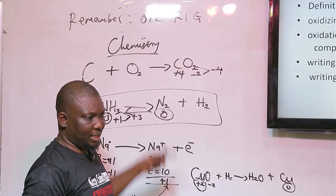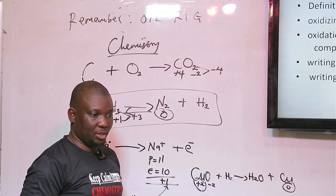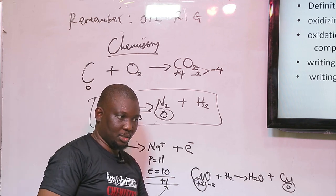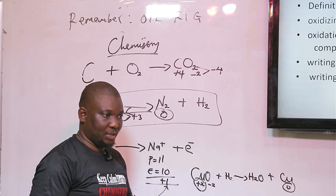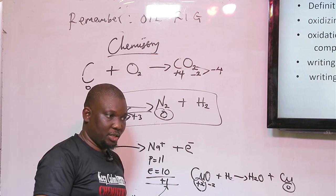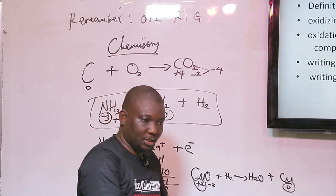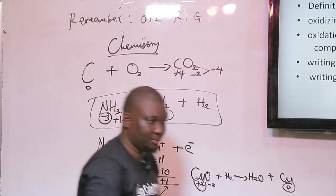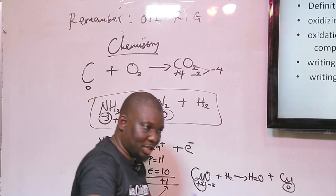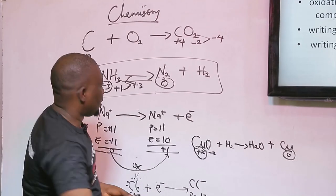We can define redox as a type of chemical reaction in which oxidation and reduction occur simultaneously in the same reaction. Any reaction in which oxidation is going on at the same time as reduction is a redox reaction.